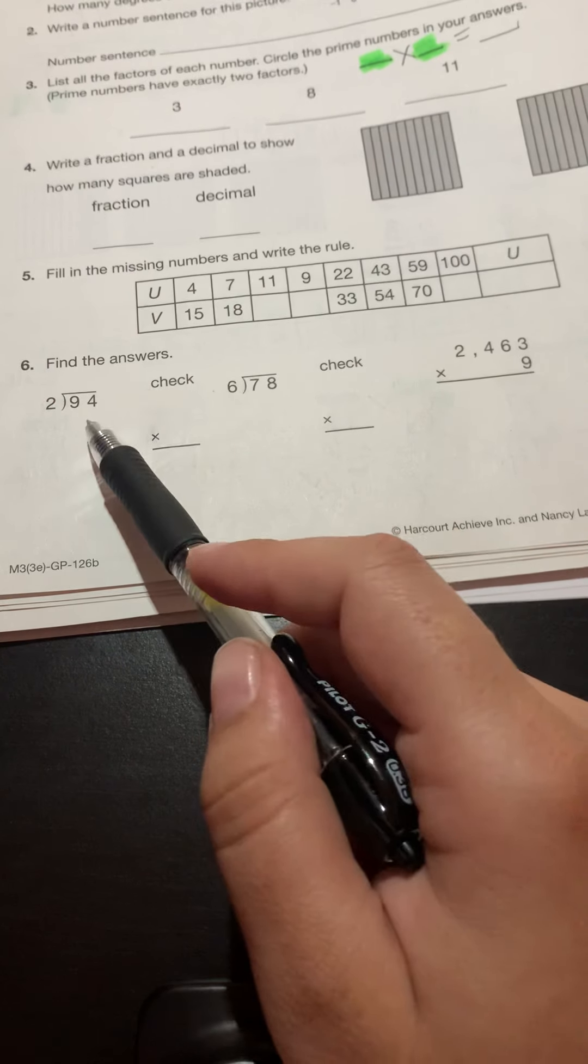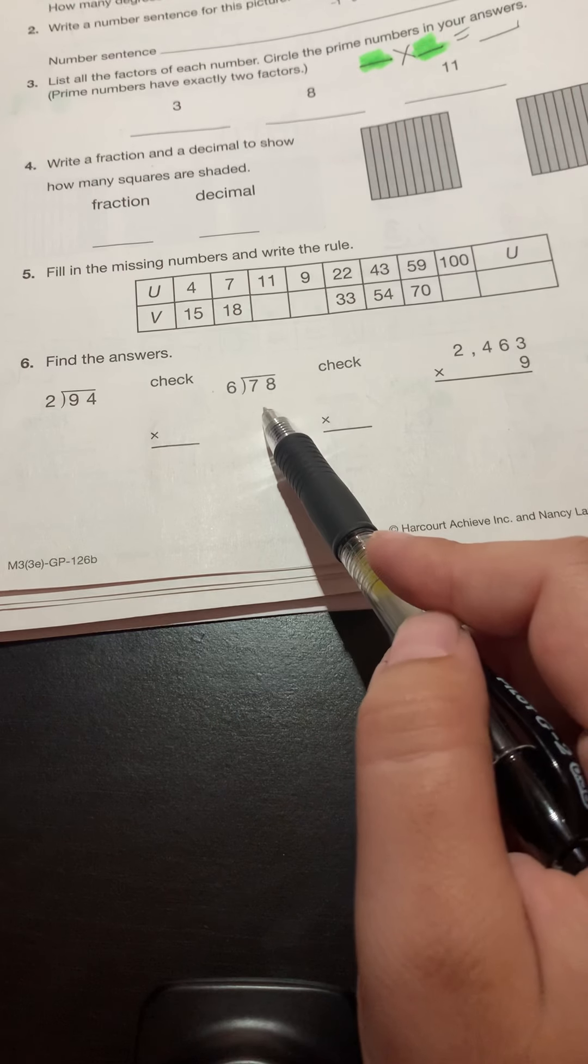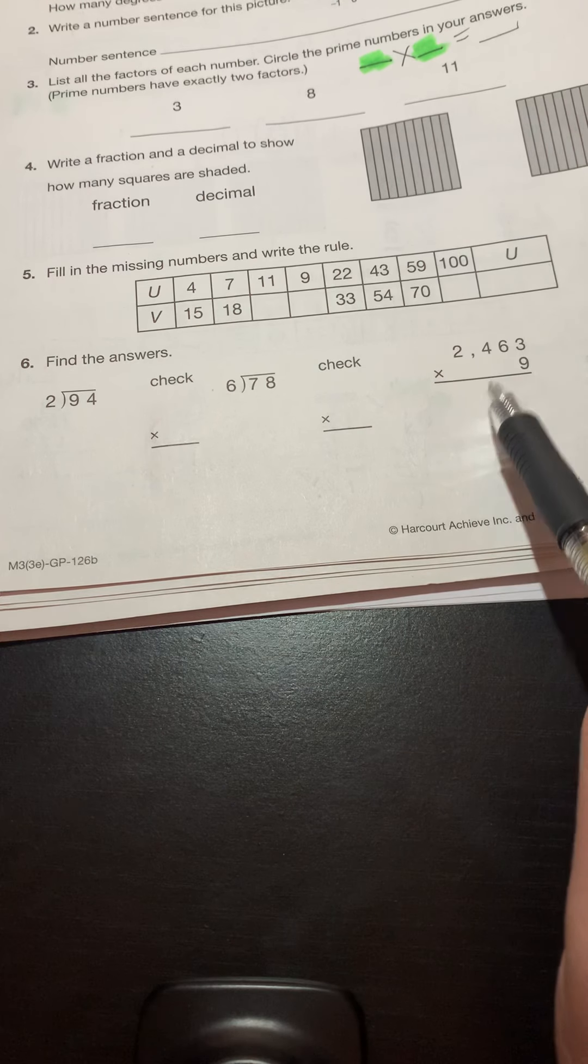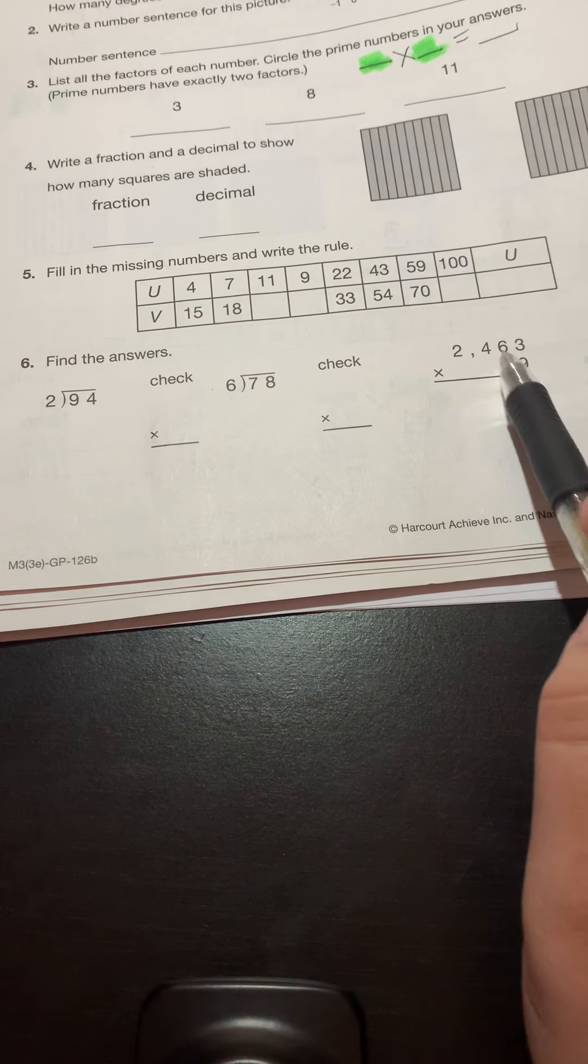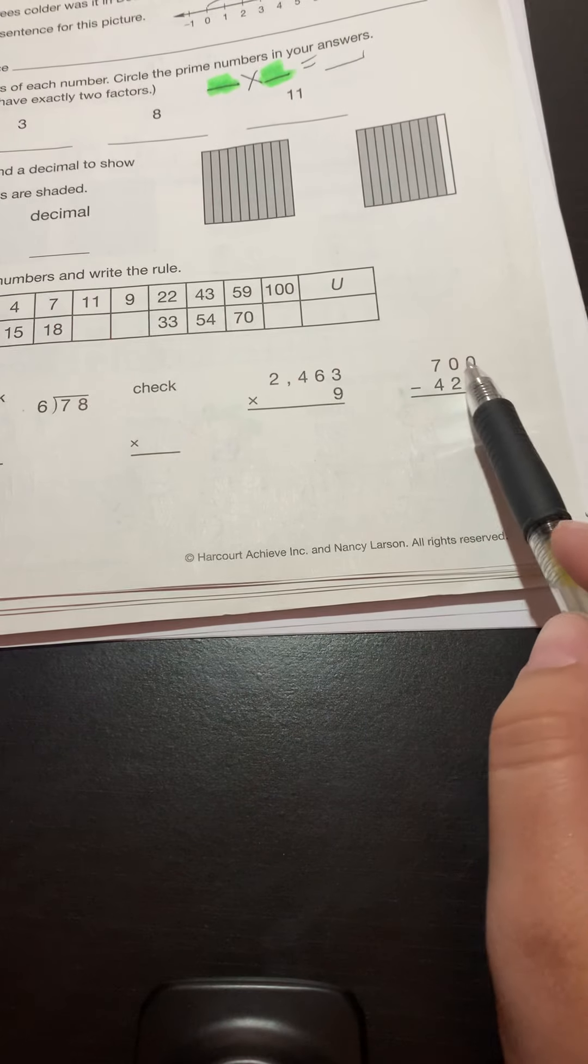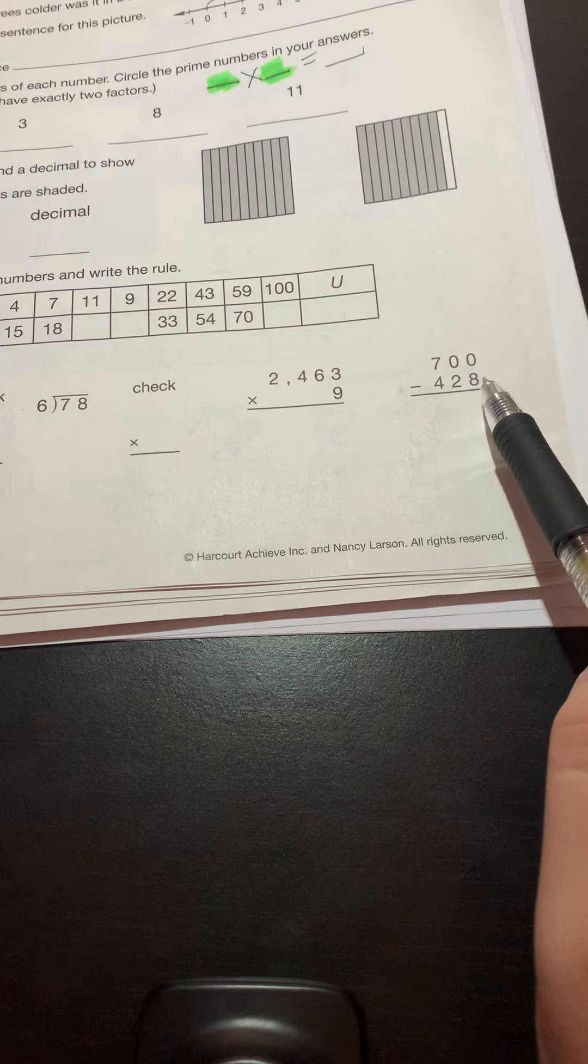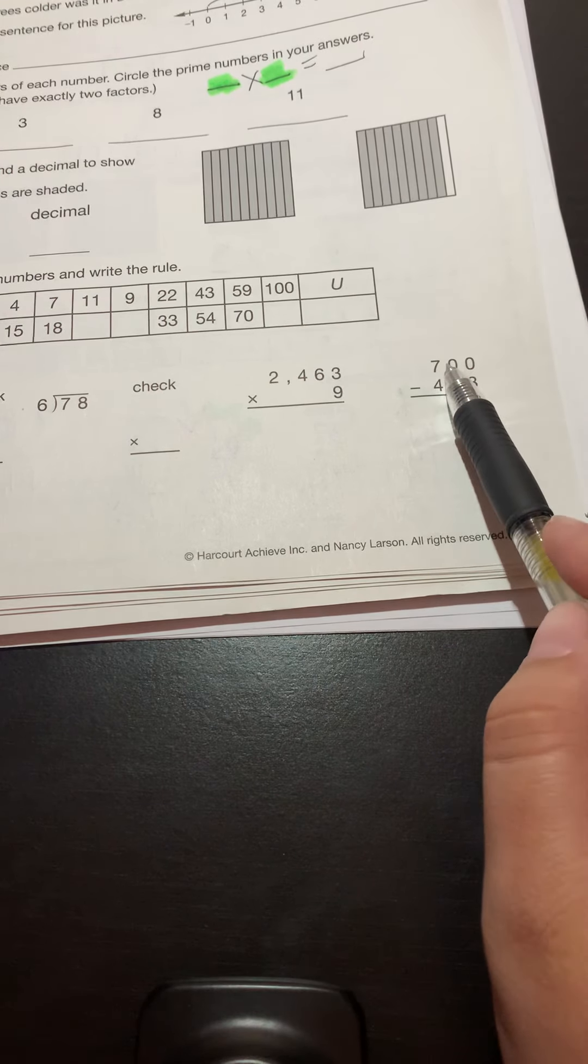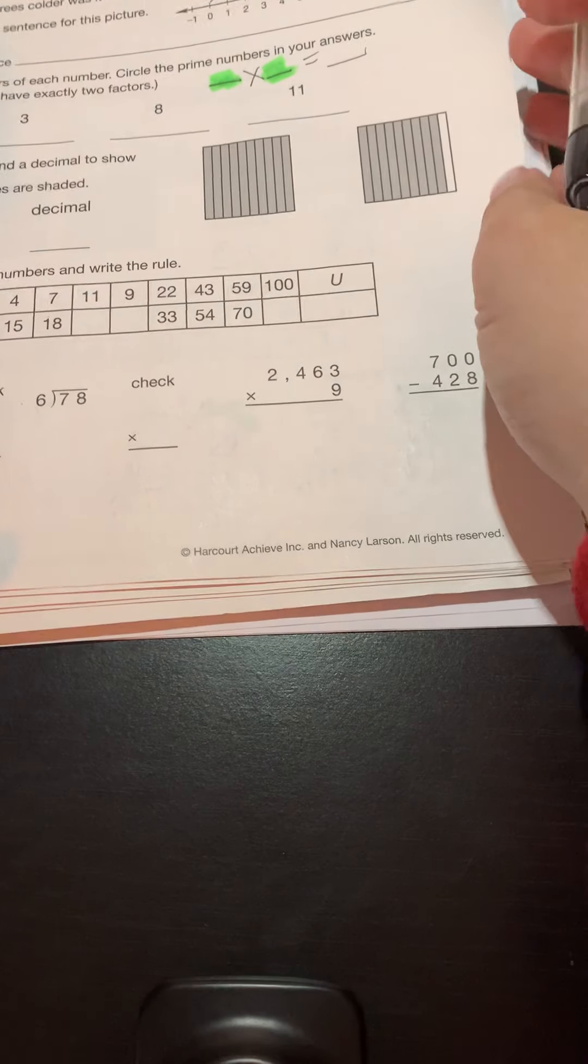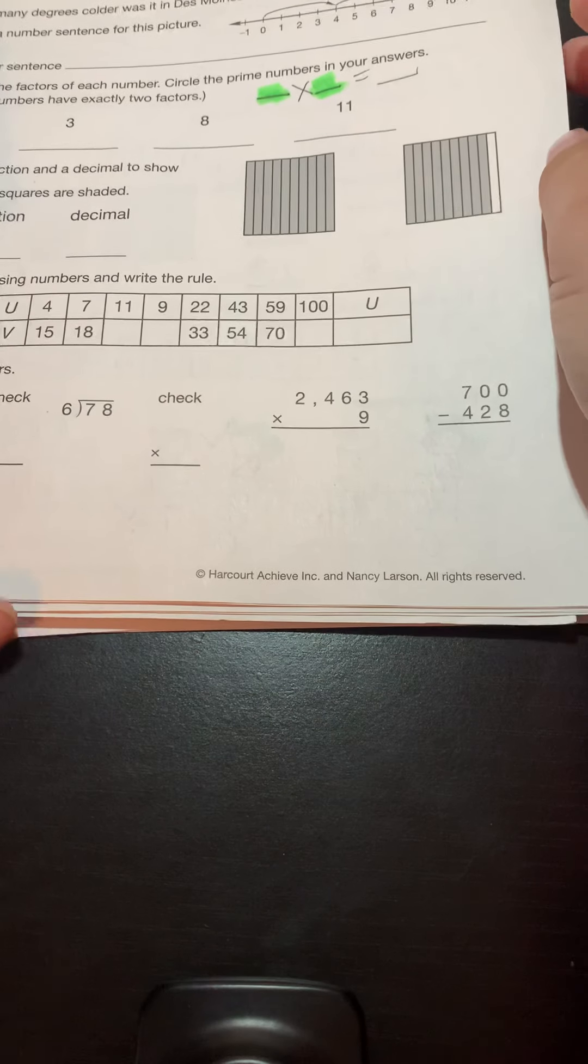For the bottom, find the answers and then check your answers with multiplication for the long division problems. Then we have multiplying here, all of the digits by the nine, and then subtracting across zeros here. Can I just say, zero minus eight is eight? No, we have to do what we did in the class. We have to go to our neighbor and see if we can get a bigger number that we can take it away from.